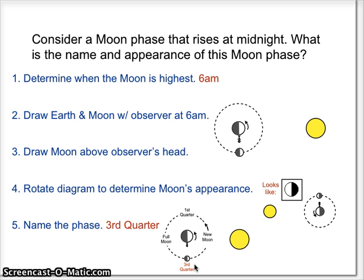So these are the steps. Anytime you're told a time about the moon, these are the steps you're going to go through. If you're told when it rises, if you're told when it sets, your first step is always going to be, let's figure out what time the moon is highest in the sky.